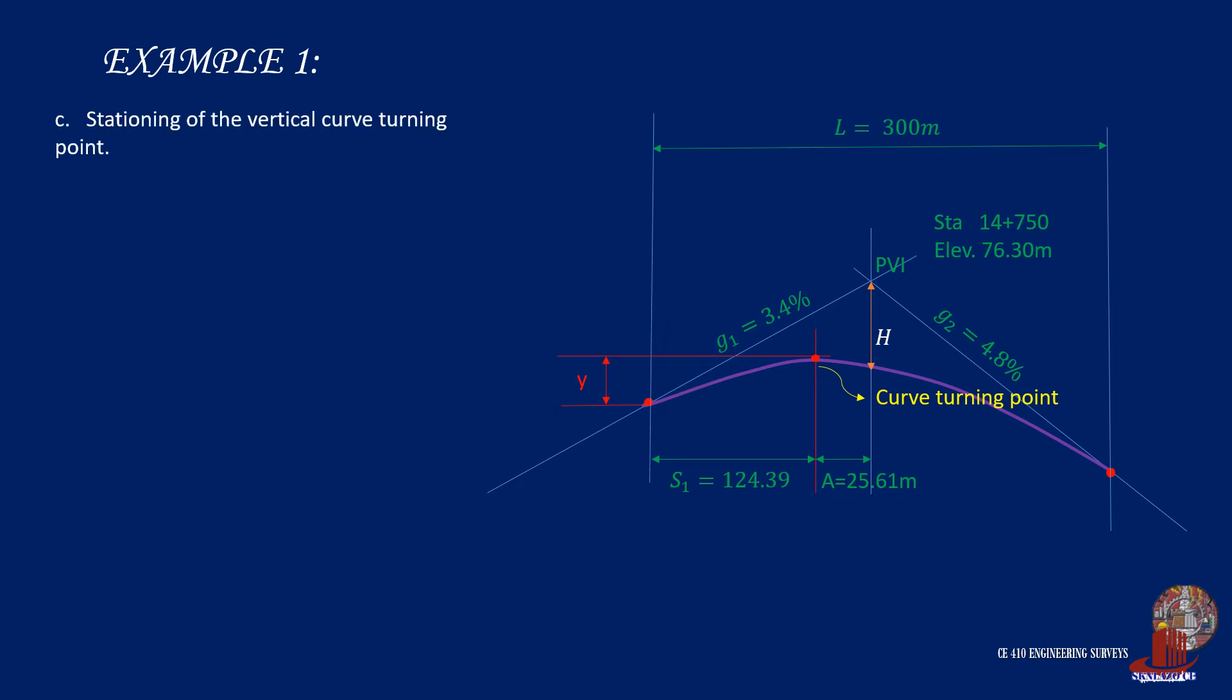Requirement C is the stationing of the highest point of the curve. Knowing the horizontal distance A from the point of vertical intersection with also a known station, subtract A to have the station of the summit, taken as 14+724.39.